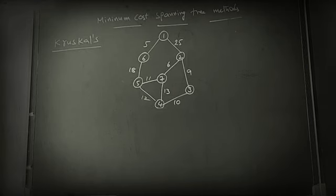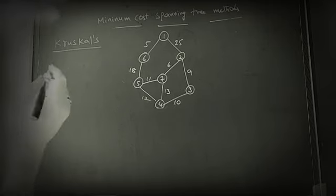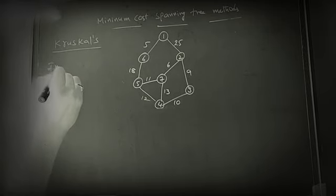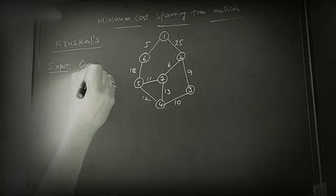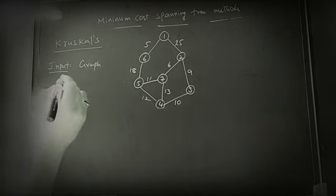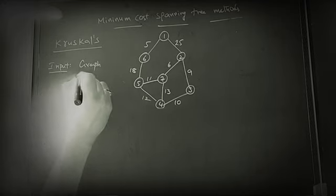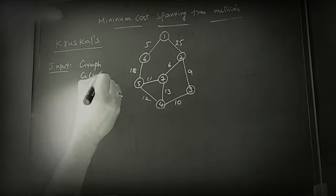Another minimum cost spanning tree method is Kruskal's. Here also the same thing. Kruskal will take the input as a graph, or you can simply write the definition like this.